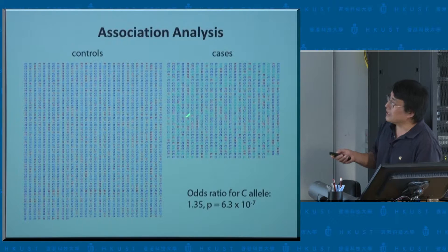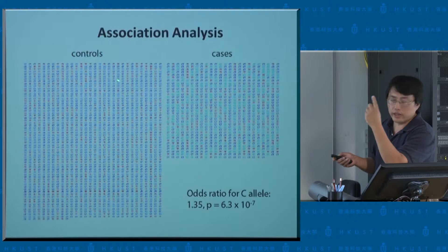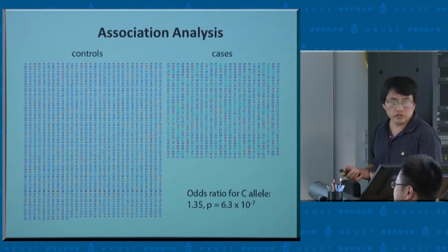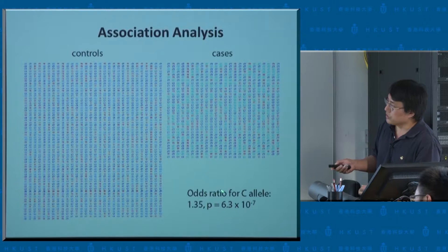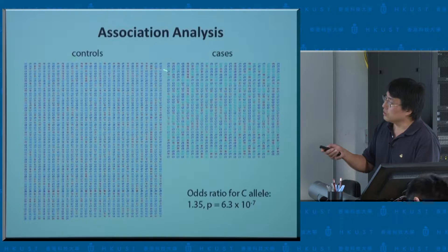You can condense all this data into a very simple two-by-three table. Each row corresponds to the control group and the case group, and three columns correspond to the number of people with a particular genotype — CC, TT, CT. You get down to a very simple two-by-three contingency table and can do a simple chi-square test. In this particular case you get an odds ratio of 1.35 and a very small p-value, suggesting this marker may have something to do with the phenotype. It's a very straightforward approach.